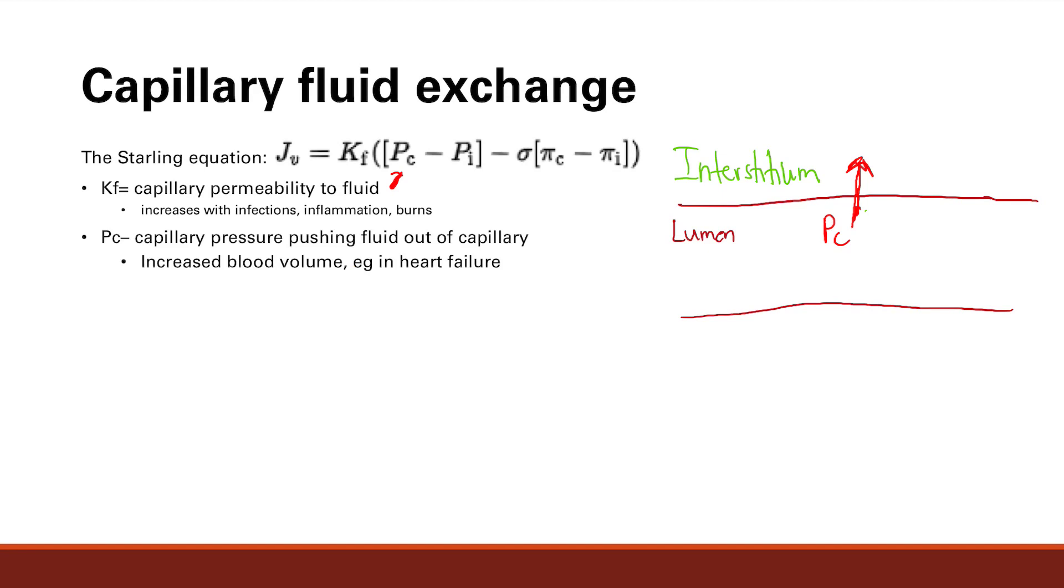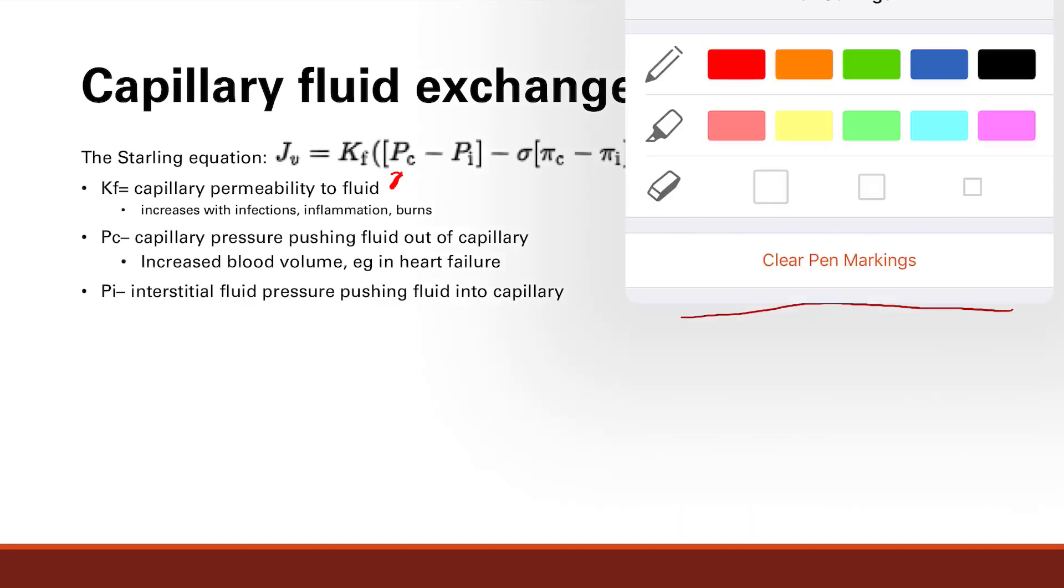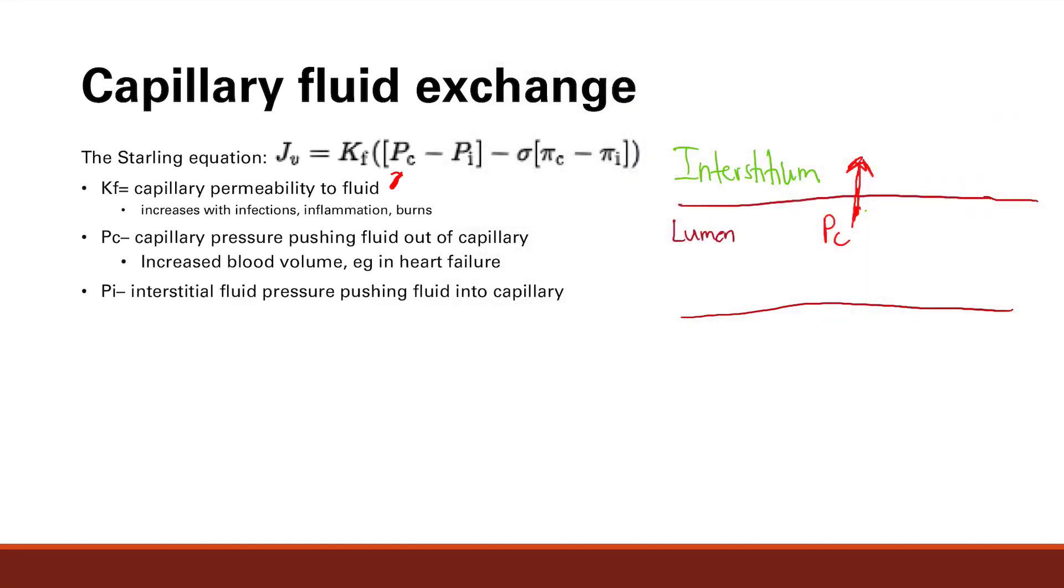The next one is called the interstitial pressure. There's also fluid in the interstitial, and that fluid has its own pressure. That's the interstitial pressure. That fluid wants to go where it's not, so it wants to go into the capillaries. So these two forces are opposing. That's why we have the C minus the P. We want to see the difference. So the difference will determine whether it's going in or out.